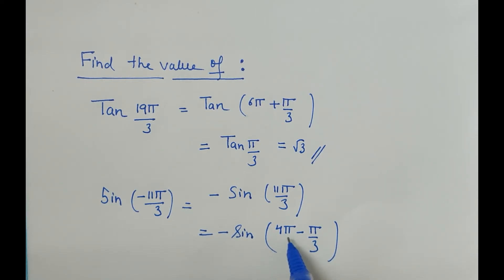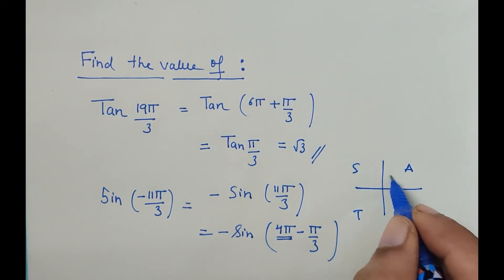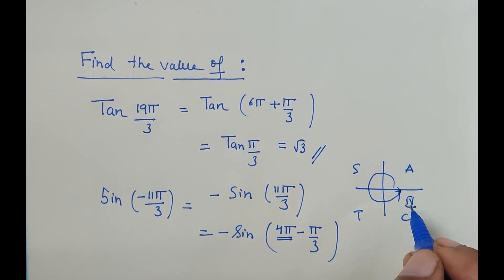360° minus theta - with the help of a diagram we can easily visualize. CAST, CAST. 360° minus theta, this complete is 360° minus theta means this fourth quadrant. So here only cos and sec are positive; remaining other trigonometric functions are negative, so this sine will be negative.